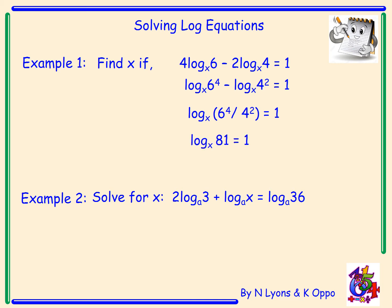Simplifying that gives log 81 (base x) = 1. In my head I'm now saying: what number to the power 1 equals 81? x must be 81, because 81 to the power 1 equals 81 — and that's done. These look complicated but taking it step by step, applying your rules of logs, they become really easy.